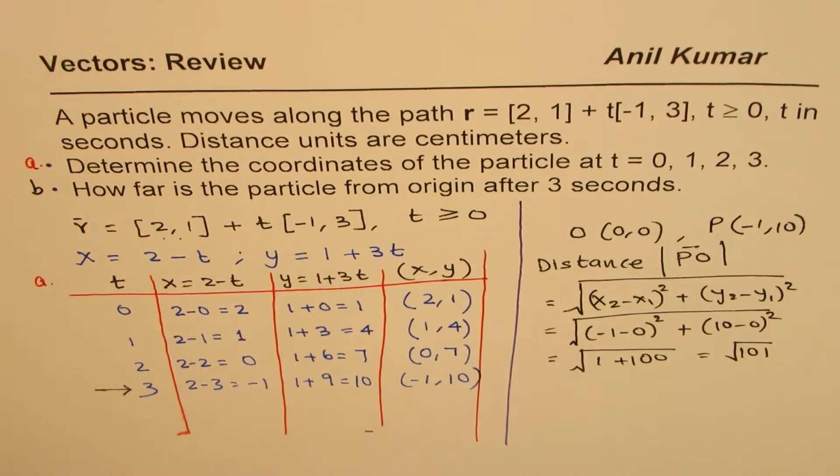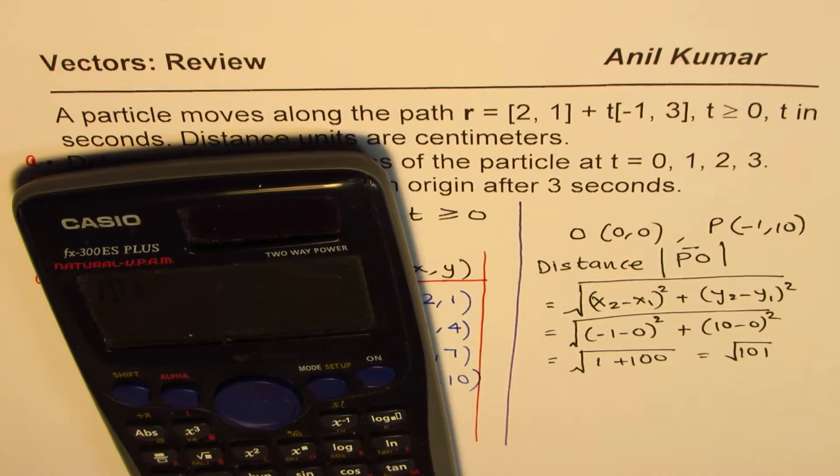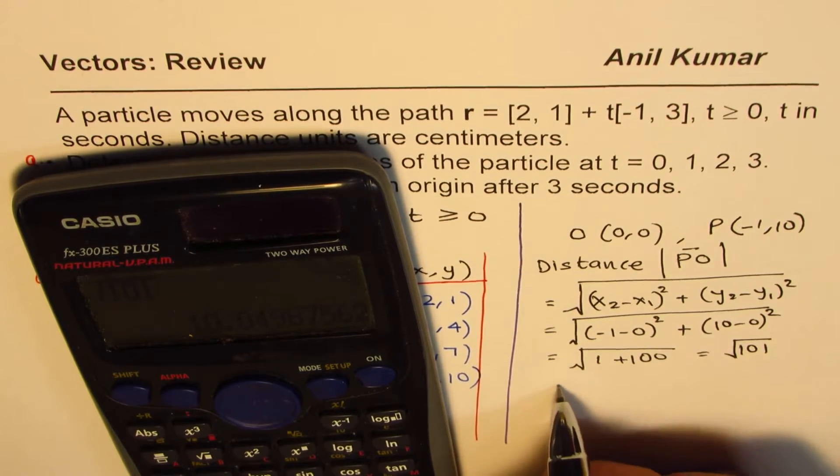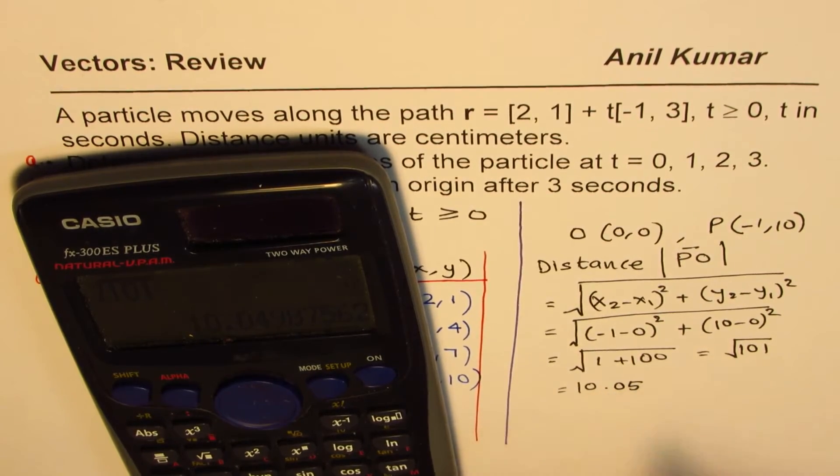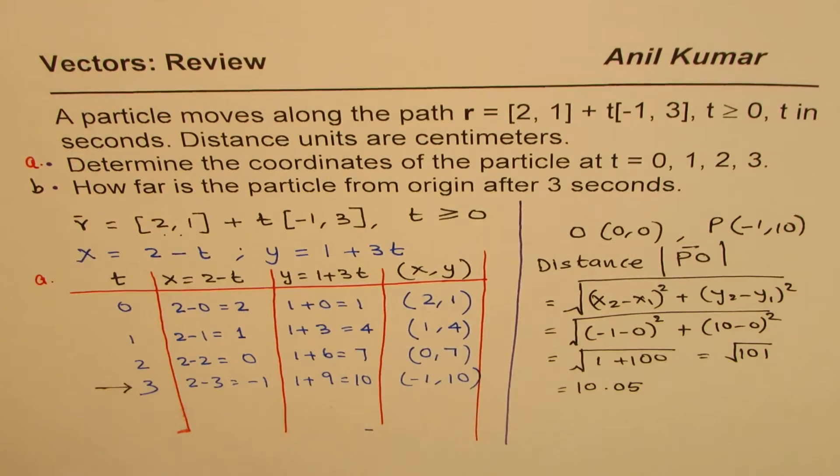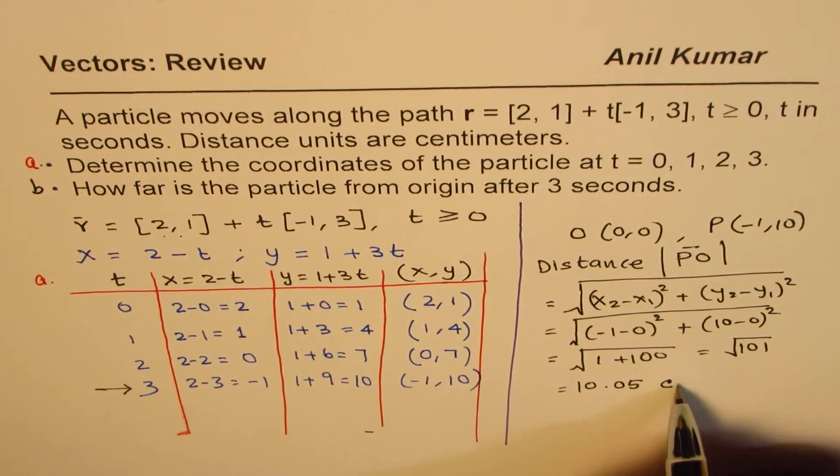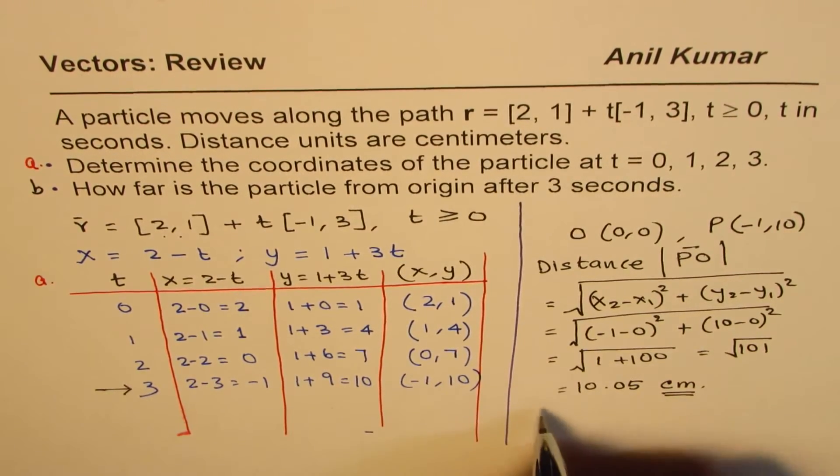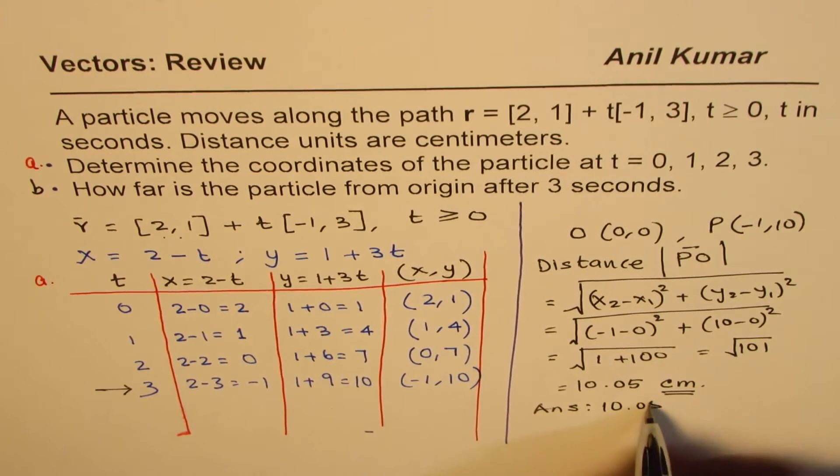So that is what you get. You could always write this answer in decimals. So you can say square root of 101, which is equal to, in decimals, is around 10.05, rounding to two decimal places. And since we know the distance is in centimeters, we'll write centimeters here. So the answer is 10.05 centimeters.